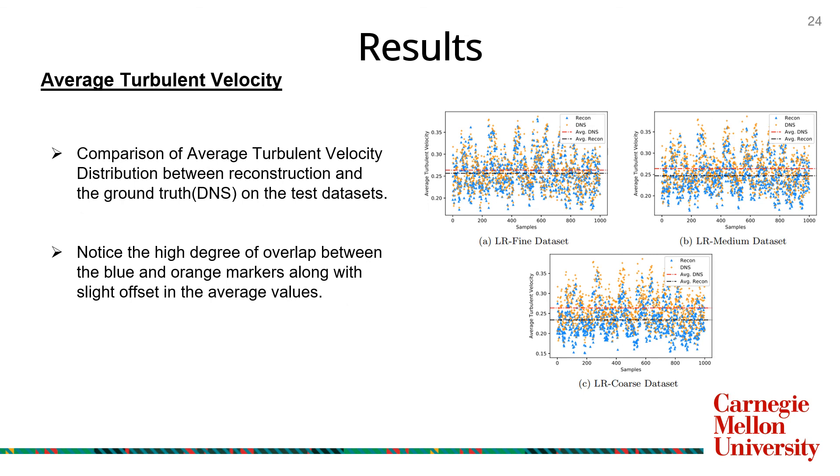The distribution of the average turbulent velocity in the test datasets yielded similar trends with the best reconstruction results on the LR fine dataset followed by medium and the coarse datasets. Notice the high degree of overlap between the blue and orange markers along with the slight offset in the average values. Furthermore, the offset reduces as the input resolution increases.